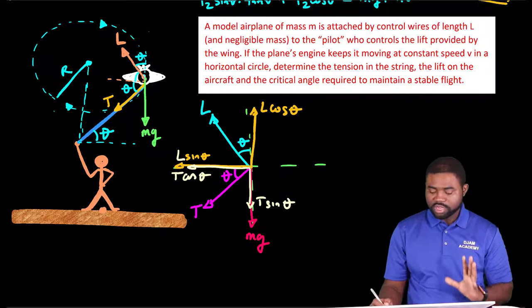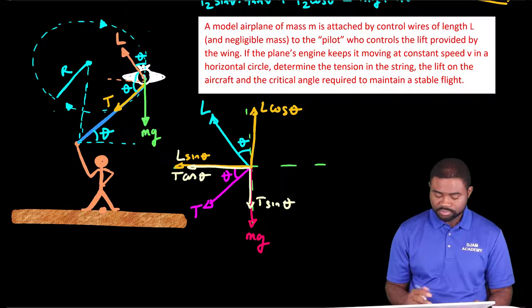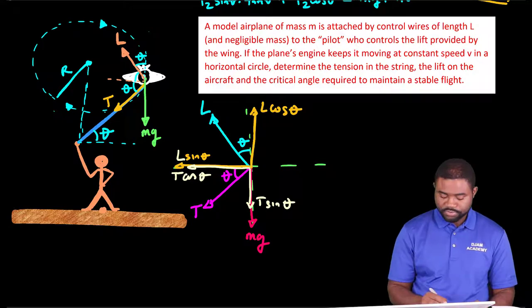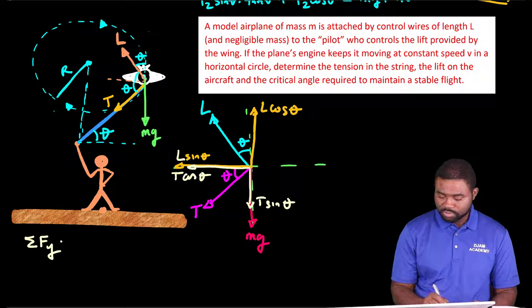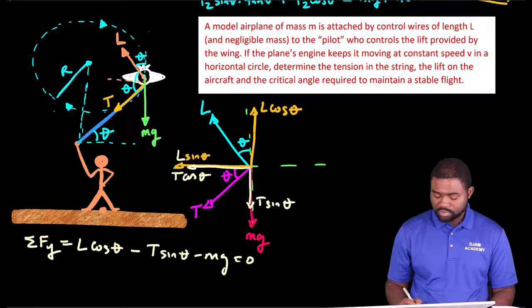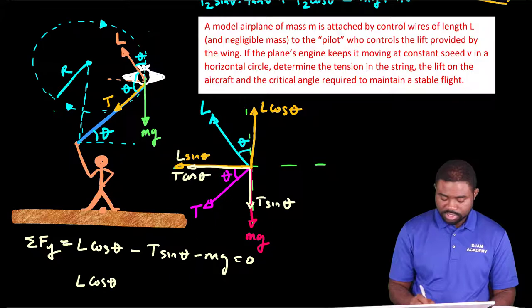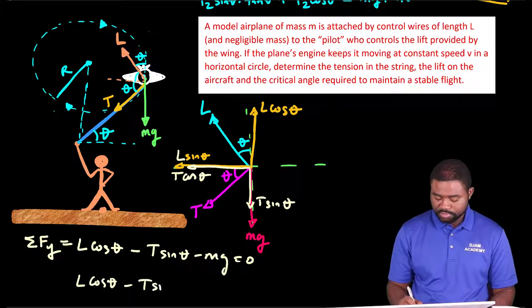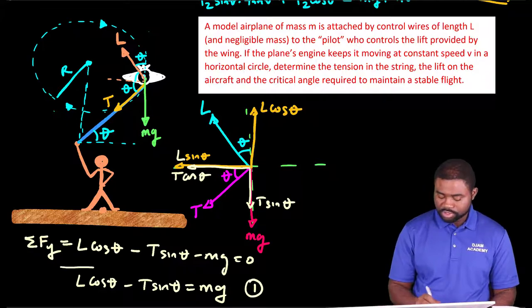Now, the next thing that we have to do is apply Newton's second law for both directions. Let's start first with the vertical direction. The summation of forces is equal to L cosine theta minus T sine theta minus mg. That will be equal to zero. So this would mean that L cosine theta minus T sine theta will be equal to mg. I'm going to call this equation 1.